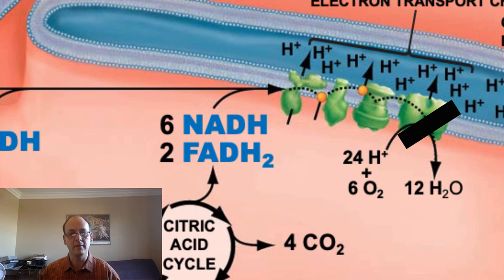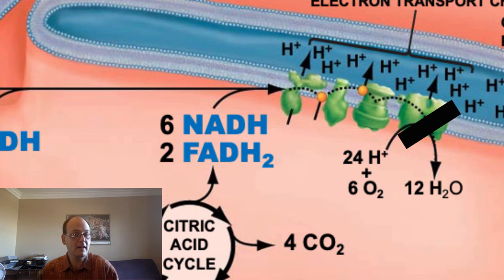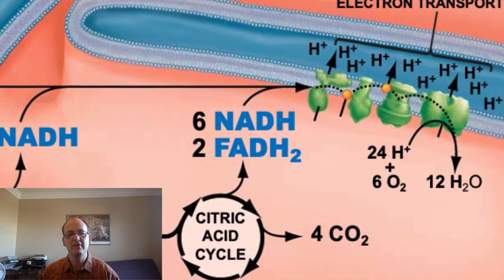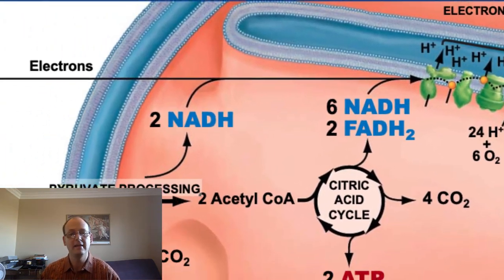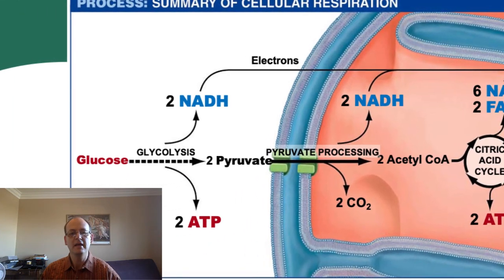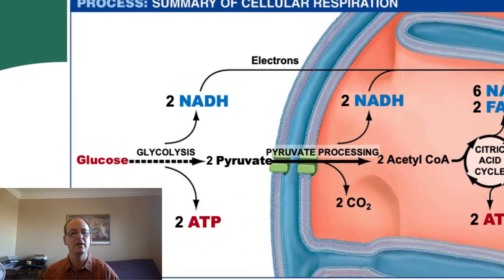Therefore, if an animal stops breathing, electrons back up in the electron transport chain, and eventually NADH and FADH2 can't deliver their electrons because the electron transport chain is essentially full. With nowhere to dump their electrons, molecules of NADH build up and can't be recycled into their oxidized state, NAD+. Finally, with no NAD+ available, even glycolysis shuts down since NAD+ is needed to accept an electron in that step 5 that we looked at previously.